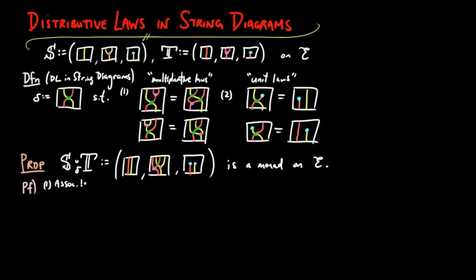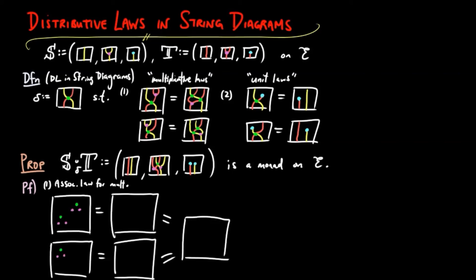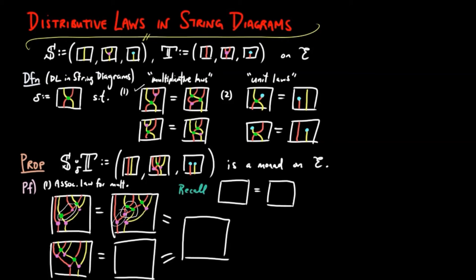To prove the associative law for multiplication, we unwind the definitions and draw the corresponding string diagrams with the multiplication involved. Then to show that the top diagram and the bottom diagram are equal, we use the multiplicative law above for the distributive law and replace the relevant dots to obtain the following. Then we use the associative law for multiplication of the monad T to obtain the diagram on the right.